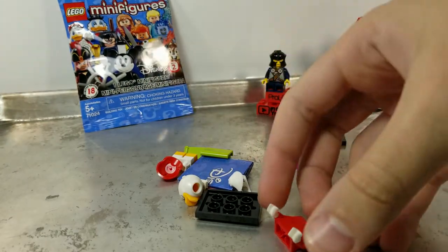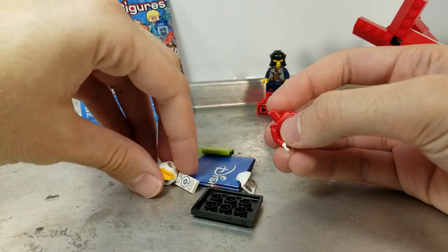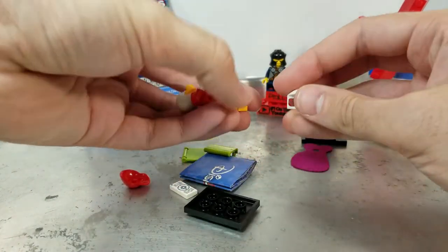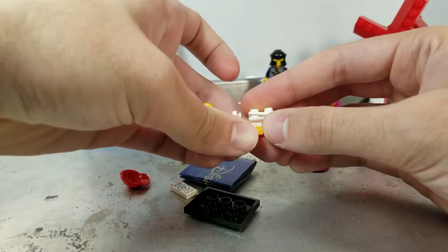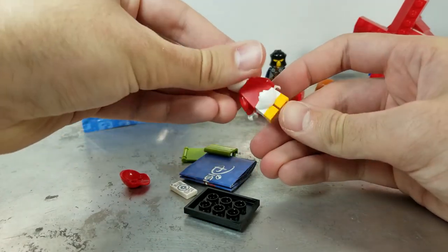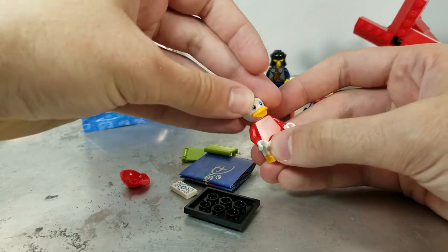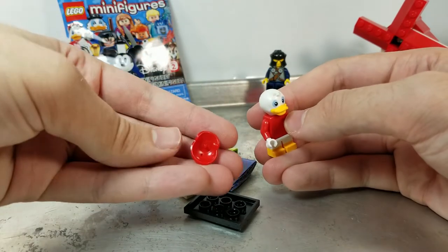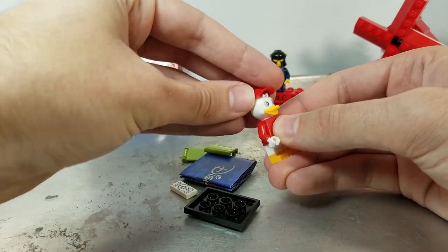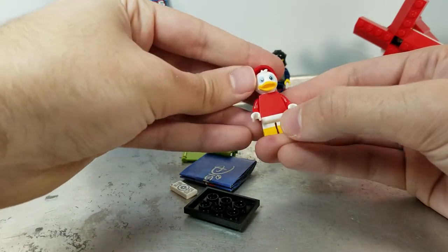Now, I don't want to embarrass myself and say their name wrong, but it is one of Donald's nephews. Very nice dual molded legs, little short legs. It's always nice to get that. Very boring printing on the body there. The hat being a mini peg is kind of cool, I guess. Allows you to put it on this sculpted head.